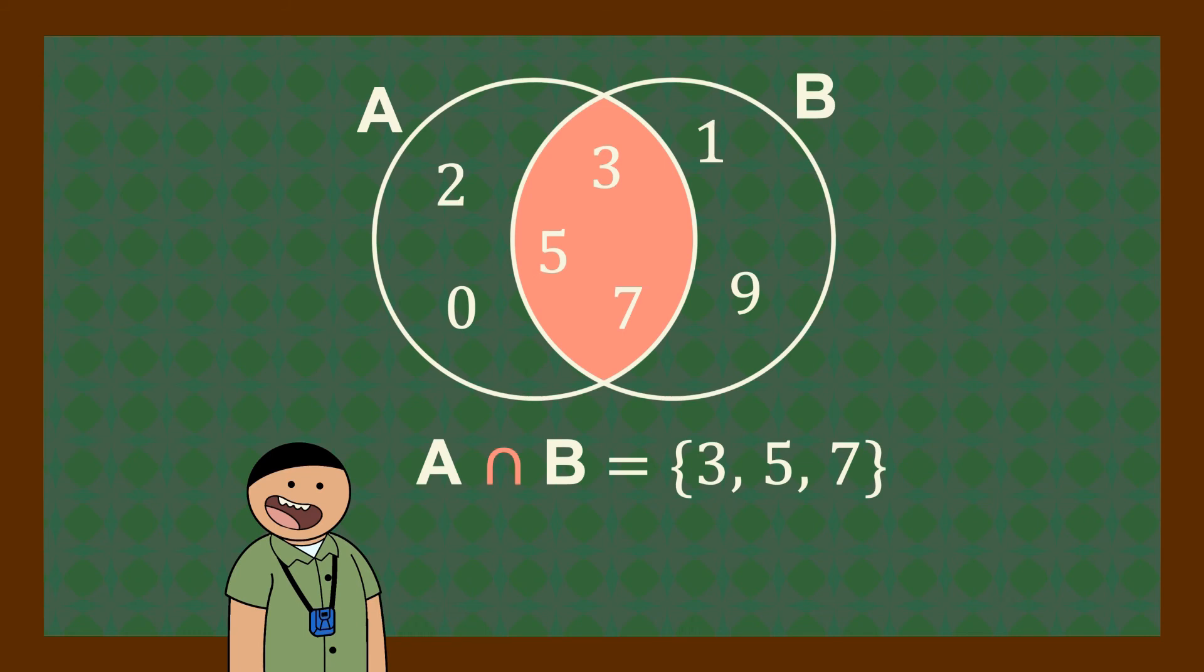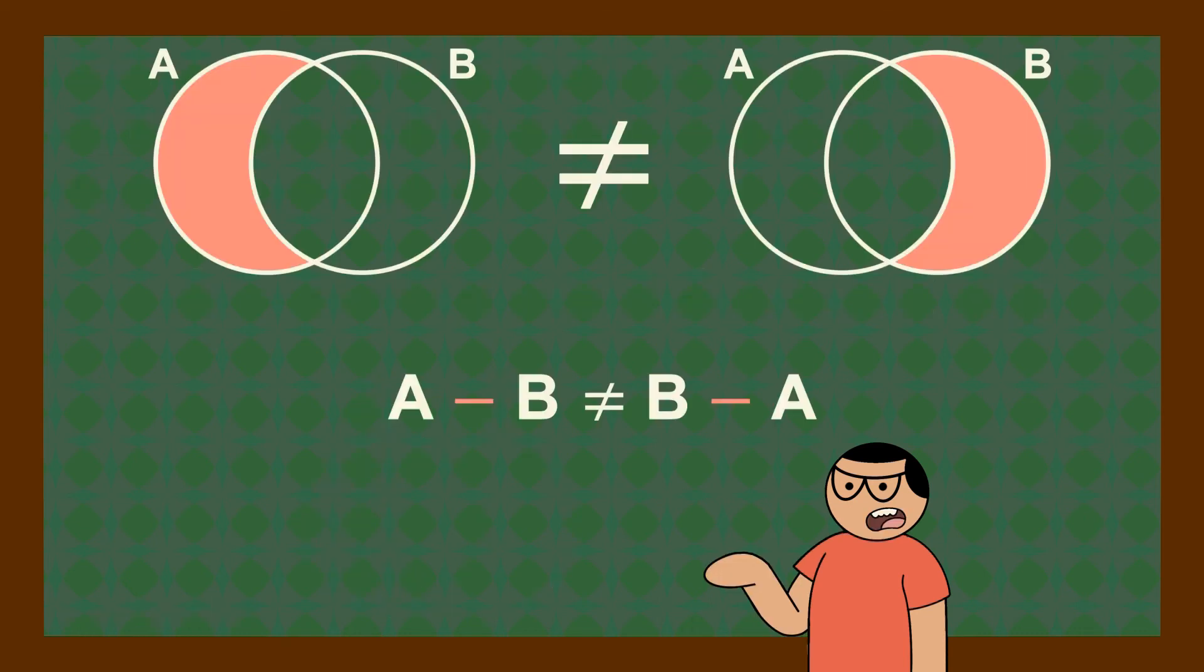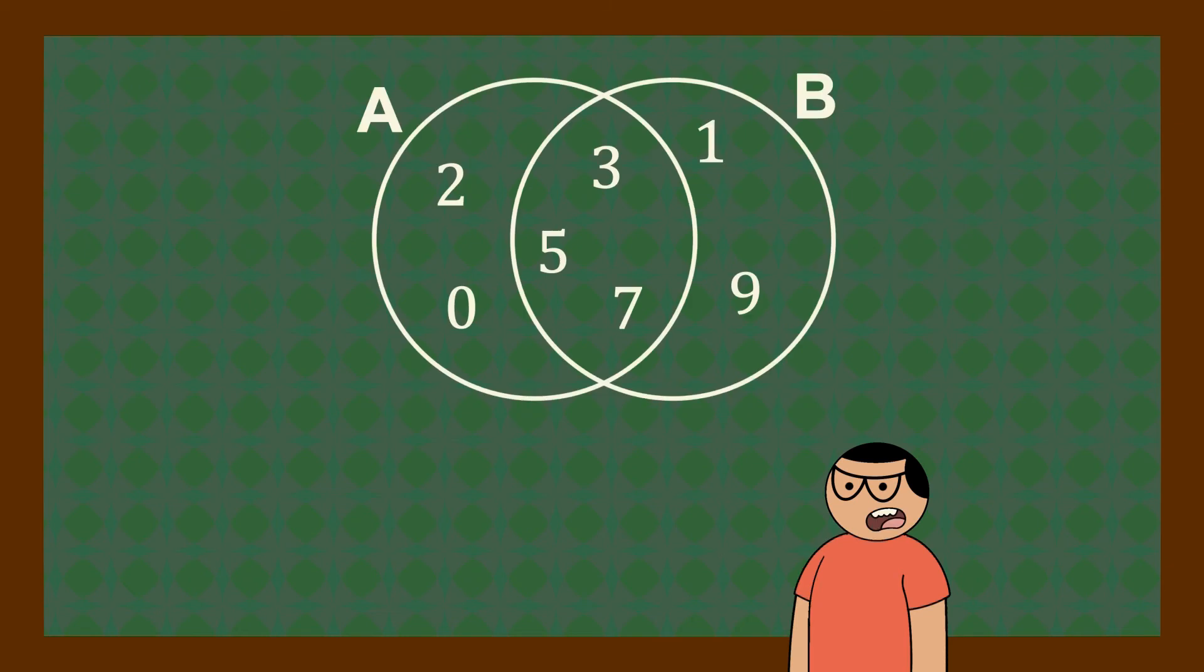The difference of two sets A and B is the collection of all objects that are in A but not in B. Take note that the difference of A and B is not the same as the difference of B and A. From the sets here, the difference of A and B is 0, 2 and the difference of B and A is 1, 9.